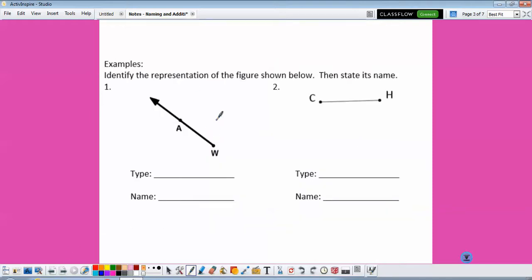So what type of figure do we have in number one? That's right, it's a ray. And when naming a ray, we're using the ray hat, the endpoint letter comes first, and then our second letter on our ray.